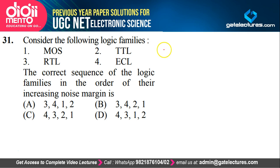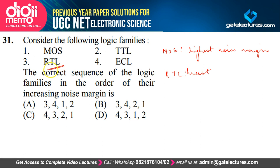MOS has the highest noise margin, and RTL has the least. If you just arrange using these two only — RTL needs to be first and MOS last — you can easily see option B is correct. You cannot remember values of noise margin for all of them. Just remember comparative values. MOS has the highest noise margin, RTL is having very less noise margin. RTL is register transistor logic, TTL is transistor transistor logic, ECL stands for emitter coupled logic. So MOS has the highest and RTL has the least among all these, so the correct option is option B.